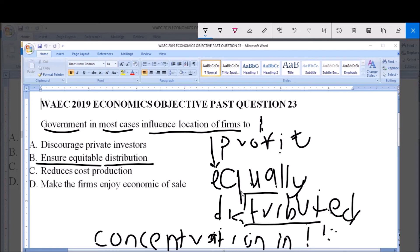As in most cases, governments influence location of firms so as to ensure that these firms and the resources they provide are equally distributed and also to prevent concentration of many firms in one location. Please subscribe to this YouTube channel for more videos and more past questions and answers. Thank you.